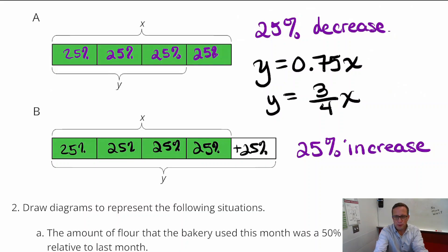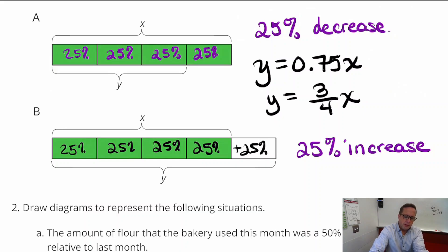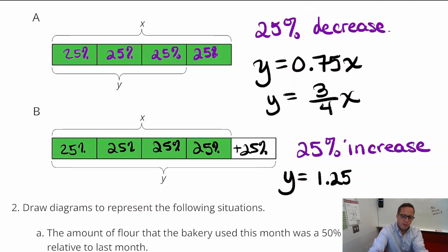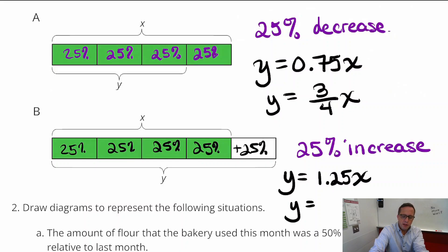So that's a 25% increase. If we write this out, we can say y is 1.25x — that's 125% of x. Or using fractions, y equals 5/4 x.